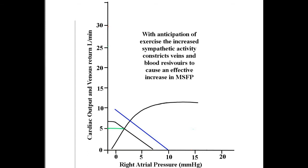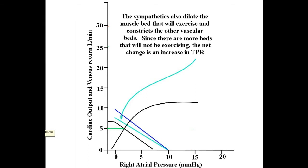At the same time, the brain anticipates the need to increase blood flow to the muscles that will be exercising. This decreases the resistance in those parts of the body that will be exercising, opening up a lot of parallel vascular beds. However, there is also a decrease in blood flow to the non-exercising tissues. This will increase the resistance in those beds. Because there are more beds that are constricting than dilating, the net effect is a slight increase in total peripheral resistance. This then shifts that curve slightly downward.